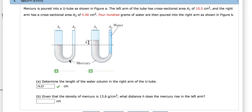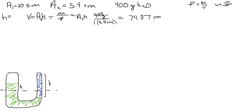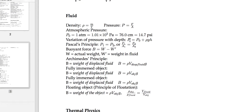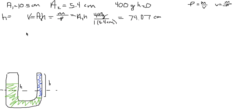Pressure in a liquid is equal at any given elevation. So the pressure from the water on the right side of the tube is equal to the pressure on the left side containing mercury. Using this equation, we set the right side equal to the left side with different variables. On the right side, pressure equals atmospheric pressure plus gravity times the density of water, which is 1, times the height of water, which is 74.07 centimeters.